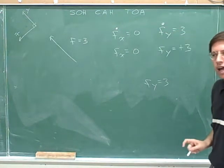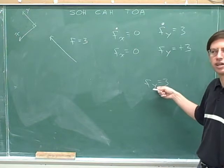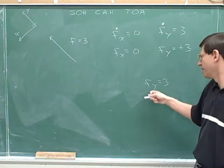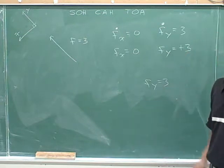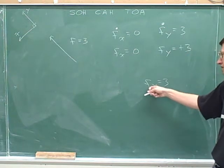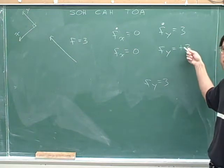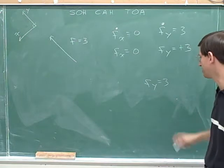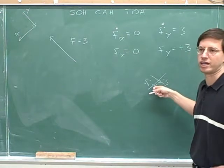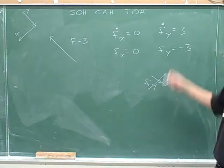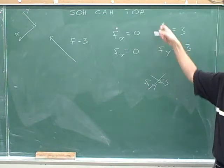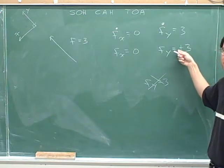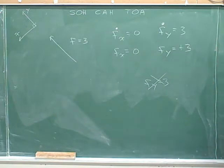If anybody wrote the answer as just 3, they got the problem wrong. It's not correct to say that the signed component is 3 — the signed component is positive 3. We should indicate the signs in front of both positive and negative signed components. It's okay to leave out the sign when you're just focusing on the magnitude, but when you give your final answer for a signed component, you should indicate the sign for either a positive or a negative component.